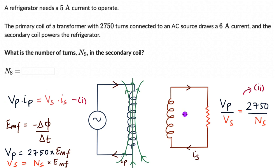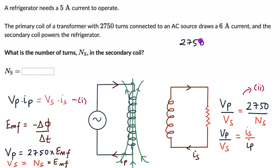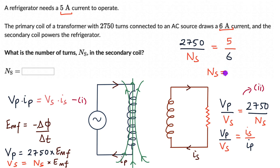Manipulating the first power equation, we can write Vp/Vs = Is/Ip. Equating the right-hand sides of both equations: 2750/Ns = Is/Ip = 5/6. Solving for Ns, the number of turns in the secondary coil comes out to be 3300.